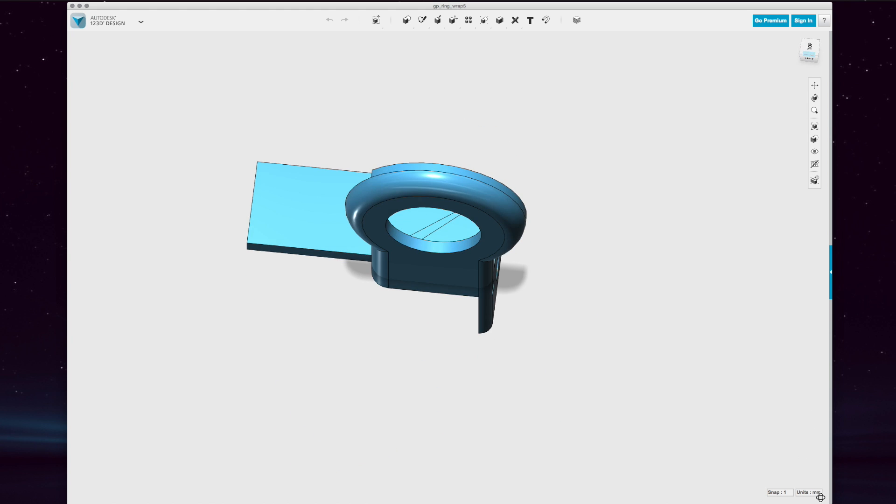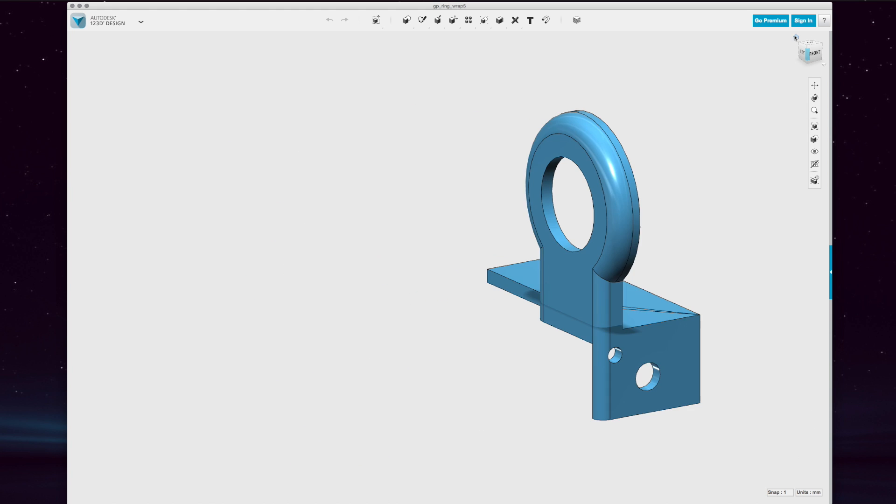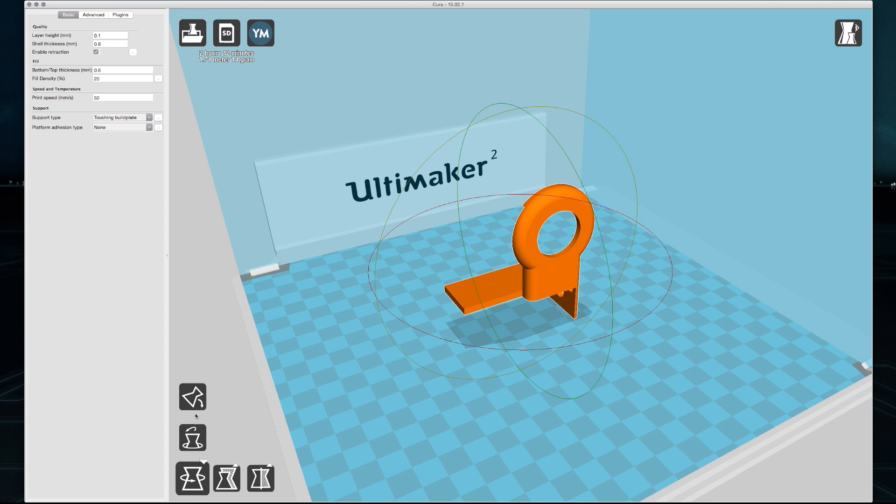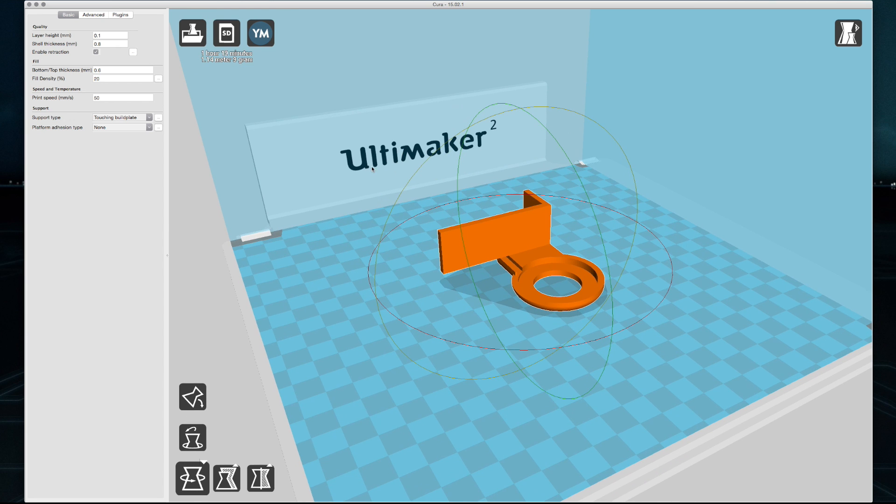I used 123D Design, and it's really easy, and it's definitely worth you guys checking out. After I had the model made, I put it into the slicing software that came with my printer, laid it down so it would print the correct way, and then printed it.